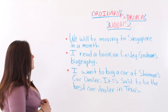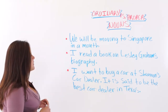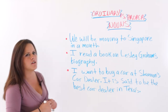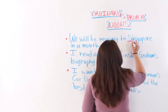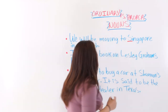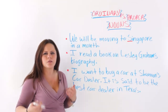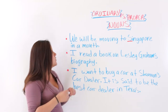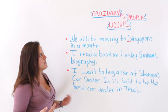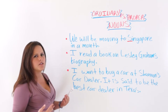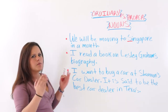The first example says: 'We will be moving to Singapore in a month.' As you notice here, 'Singapore' has a capital letter because it is a particular or specific place. That makes it a proper noun — it is a specific place.